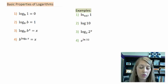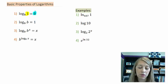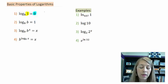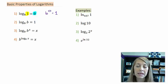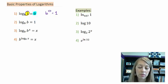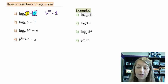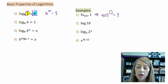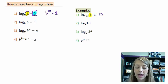The first property: anytime you have a log — and this holds true for natural logs too — where your argument is 1, the answer is guaranteed to be 0. The reason is, if I transform this into exponential form, b to what power gives us 1? The answer has to be 0 because b cannot equal 1. So anytime you have a 1 in the argument, your answer is guaranteed to be 0. For example, log base 407 of 1 equals 0 by property 1.